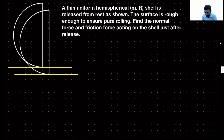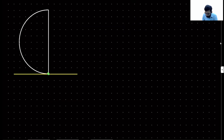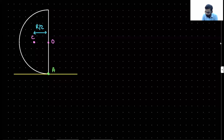Let me copy the diagram. The point of contact of the shell with the ground, let us call that point A. The center of mass of the shell, let us call it point C. Since the hemispherical shell is uniform, the center of mass will be at a distance of R by two from the center of curvature, which we will call point O. The initial angular velocity of the hemispherical shell is zero, because it is released from rest.